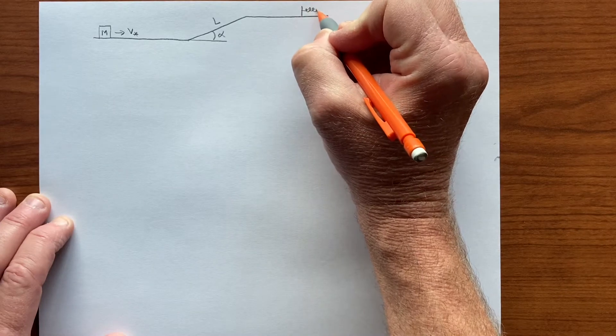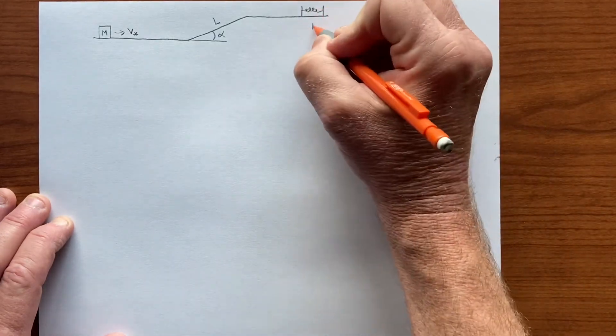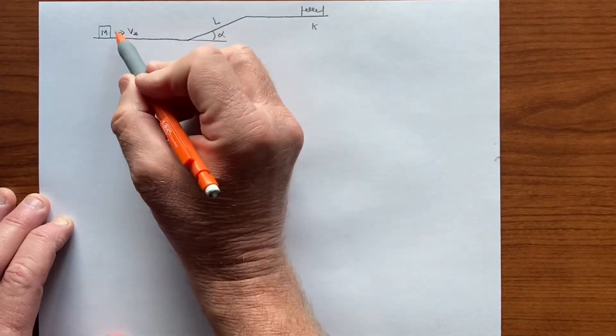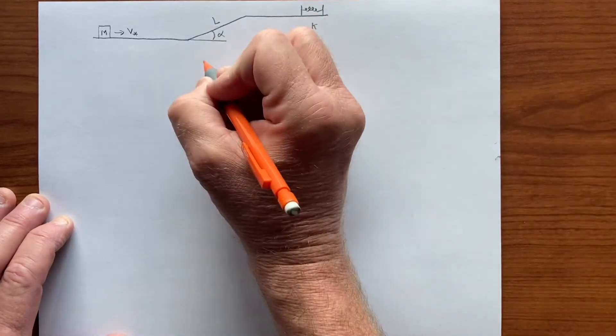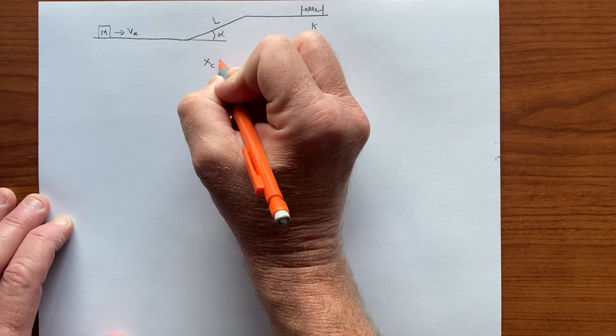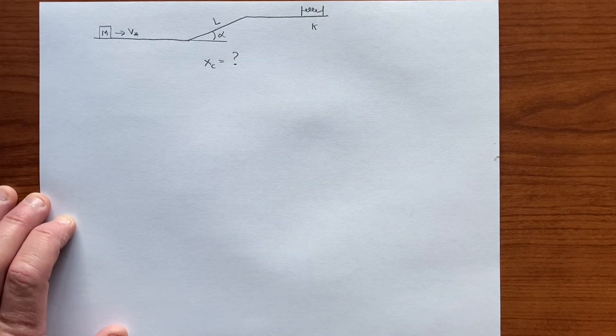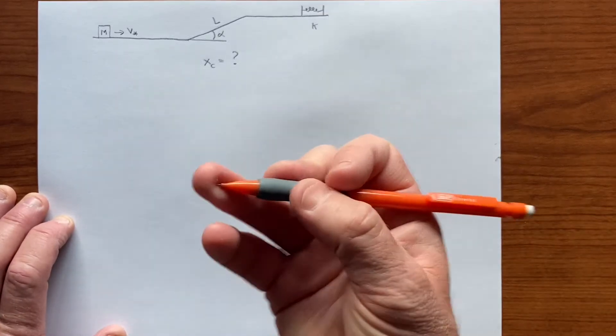there is a spring with spring constant k and the object compresses the spring. We want the maximum compression of the spring, Xc for compression. We'll find that. So this is just an energy conservation or work equals delta k problem.